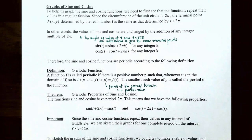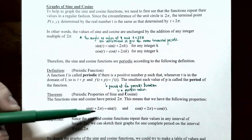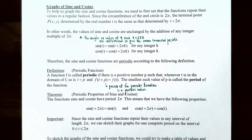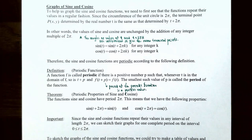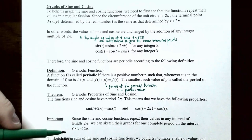This means sine(t + 2π) = sine(t) and cosine(t + 2π) = cosine(t). The smallest number before cosine or sine starts repeating output values is 2π. Since they repeat their values in any interval of 2π, we can sketch one complete period over the interval 0 ≤ t ≤ 2π.